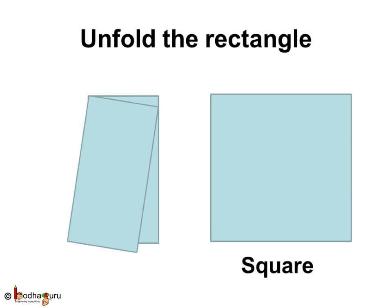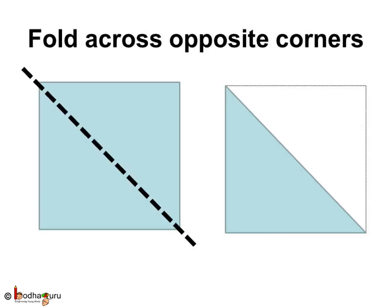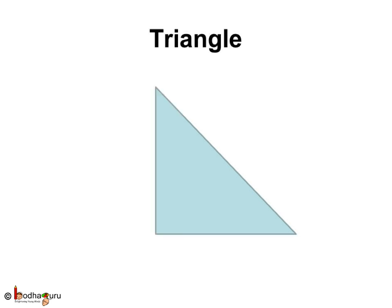Now, again open the fold. That is, unfold the rectangle. What do we get? We get the square paper again. Now, we fold it in a different manner. Fold it from the opposite corners, like this. We get a new shape. This has only three sides. One, two and three. Wow! We get a triangle.